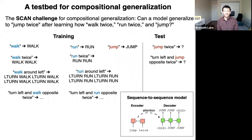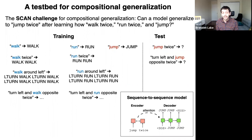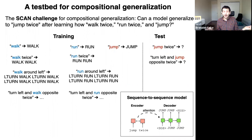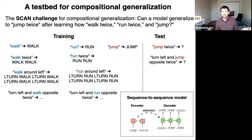We created a testbed where compositional learning can be studied in a very pure form, and we called this the SCAN challenge for compositional generalization. The key question behind SCAN is: can a model generalize and understand how to jump twice after learning how to walk twice, run twice, and then how to jump on its own?